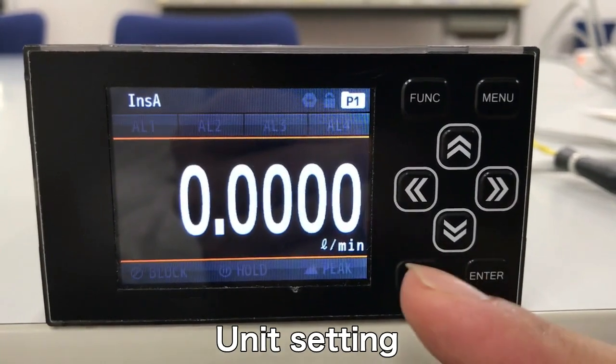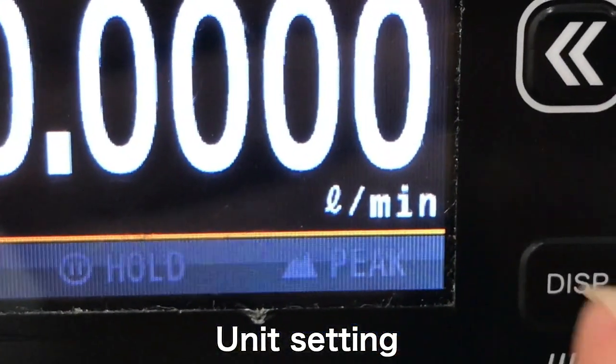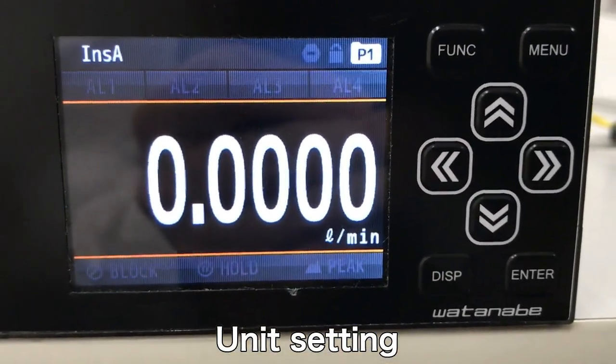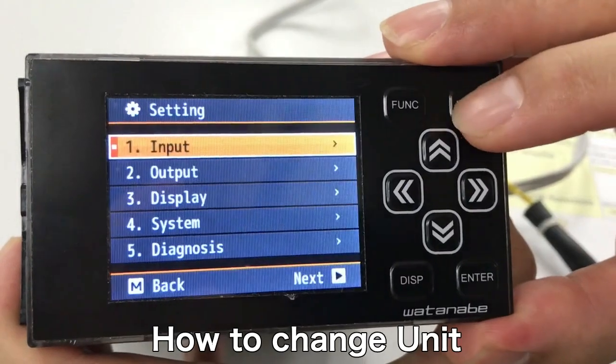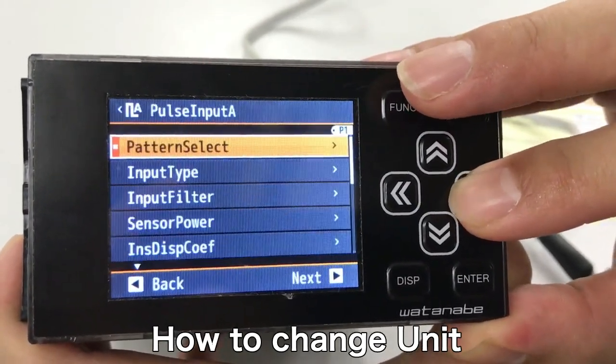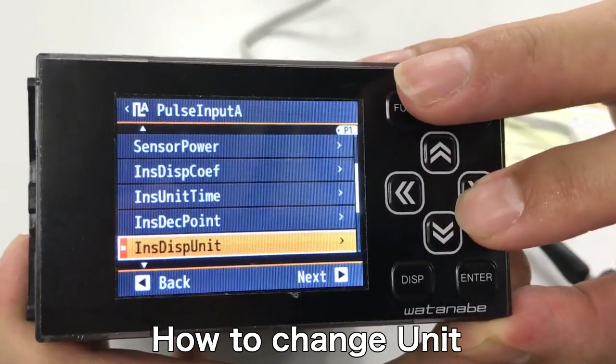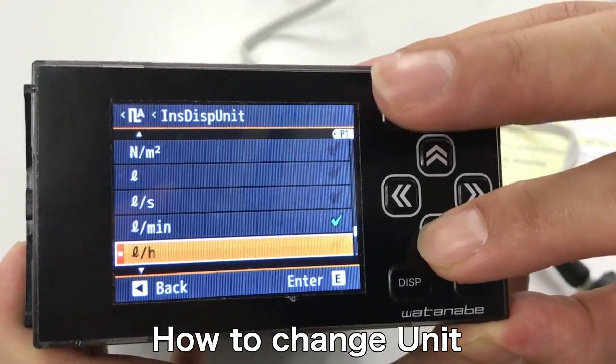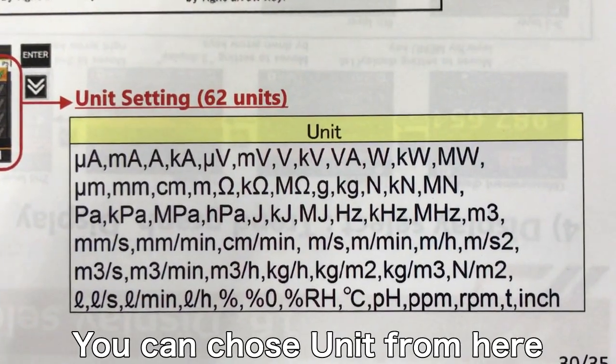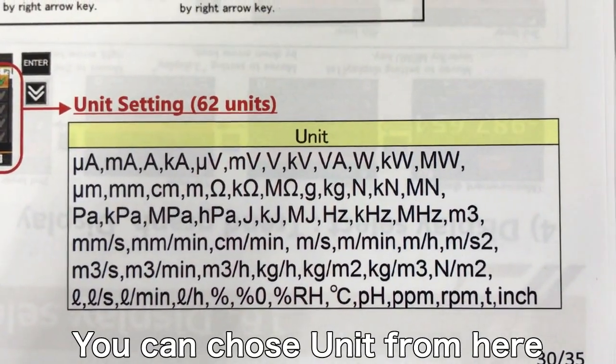Also you can change the unit. Now liter per minute. Can you see? I will try to change this unit now. Push menu. Input. And the pulse input A. And this one. Now you can choose the unit from here. You can choose from this 62 units. And also you can make custom unit.